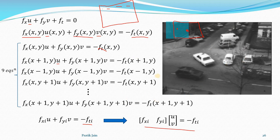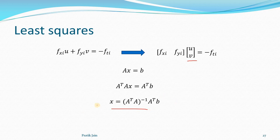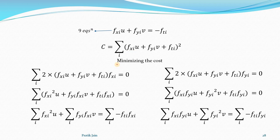The Lucas-Kanade approach ends there — that simply. To give some intuition about what least squares is doing: instead of using the formula directly, we can take a different approach by defining a cost function. We have nine equations, so we define a cost function for these nine equations.